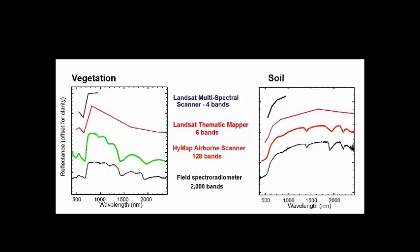That final example, the field spectrometer, is not an image sensor, but it collects single spectra of material that the sensor's pointed at, and that collects thousands of bands. This gives you a visual representation of the differences between the different amount of information that's available with increasing resolution.